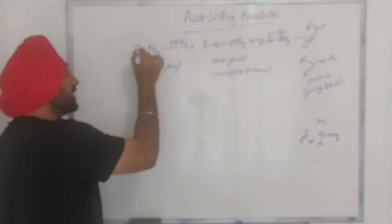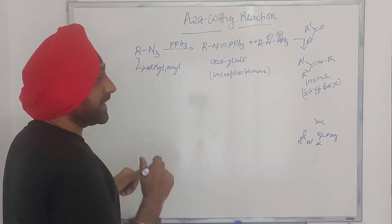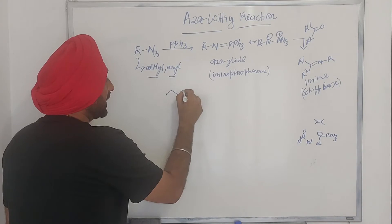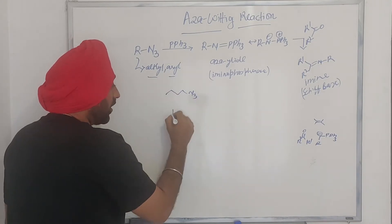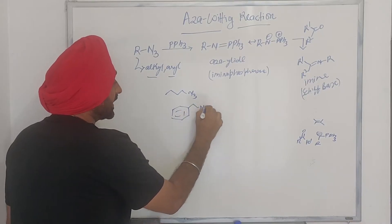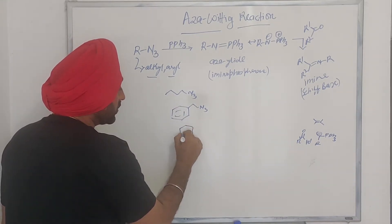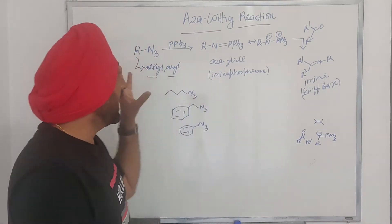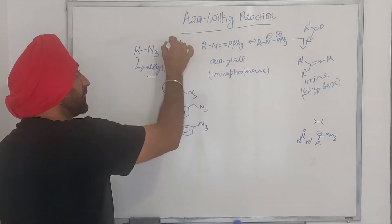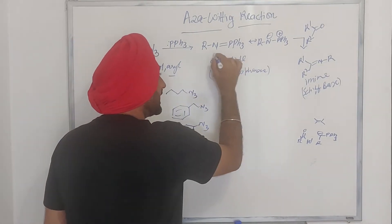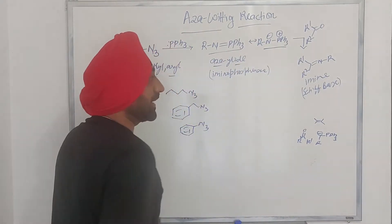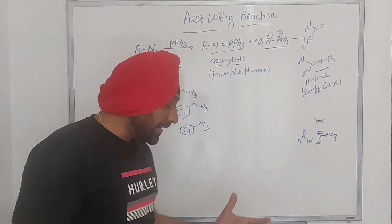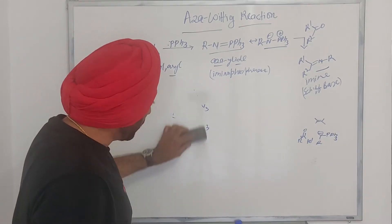So basically what do we do? We start from the azide. This azide can be an alkyl azide or an aryl azide — it could be an alkyl azide or an aromatic azide. So you can have various possibilities of azides. When you treat them with triphenylphosphine, what you basically form is an azaylide. This alkyl azide reacts with the aldehyde or ketone, and what you form is an imine. It's a very straightforward reaction.